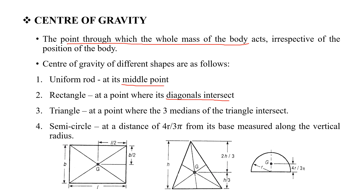The next one is the triangle — the centre of gravity is at the intersection of the three medians. The next one is the semicircle — the centre of gravity is at a distance of 4r divided by 3π from the base.